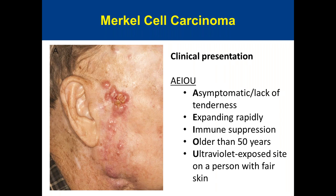For clinical presentation, the mnemonic AEIOU is helpful: A for asymptomatic — no pain; E for expanding rapidly; I for immunosuppression; O for older age, more than 50 years old; and U for UV-exposed area in Caucasians. These presentations help residents and fellows memorize the key features of this tumor.